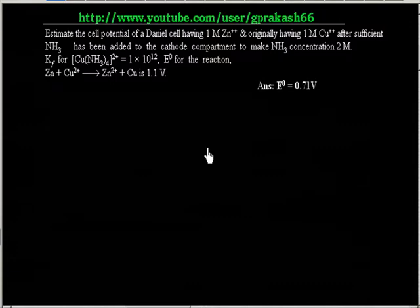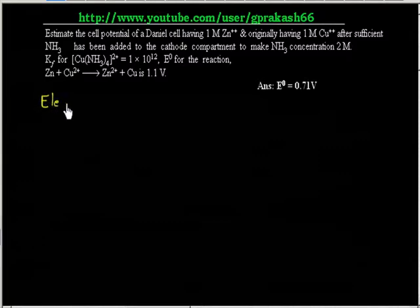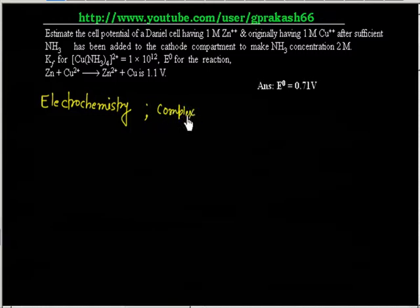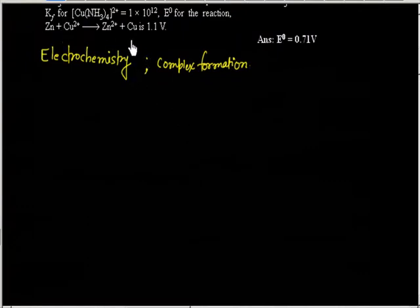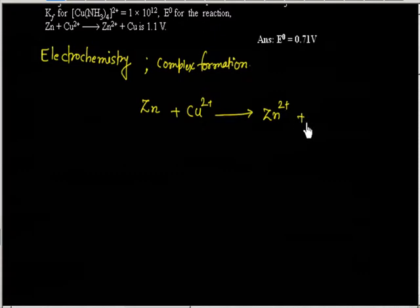We have to calculate the cell potential after complex ion formation. This question is related to both complex ion formation and electrochemistry. Initially, E° is given for the cell reaction: Zn + Cu²⁺ → Zn²⁺ + Cu. The standard cell potential E° is given as 1.1 volt.